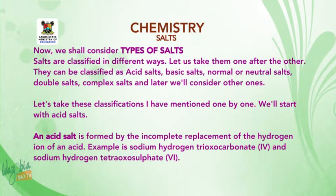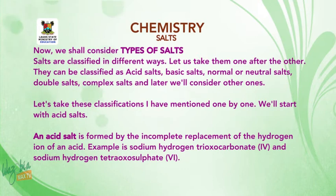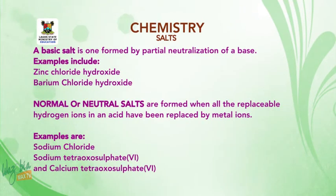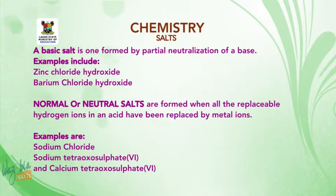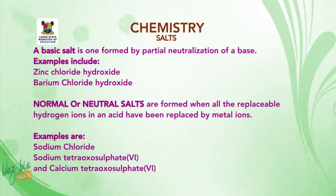An acid salt is formed by the incomplete replacement of the hydrogen ion of an acid. Examples are sodium hydrogen trioxyl carbonate 4 and sodium hydrogen tetraoxyl sulfate 6. A basic salt is one formed by partial neutralization of a base. Examples include zinc chloride hydroxide and barium chloride hydroxide.